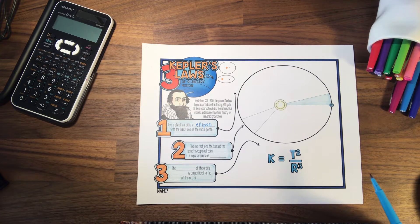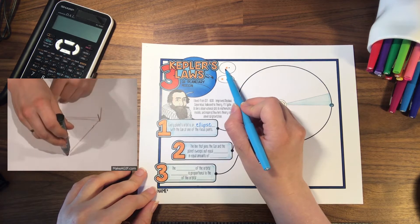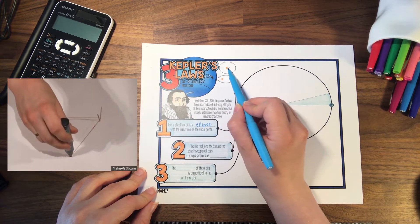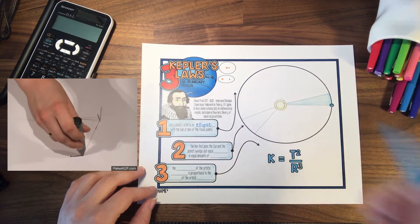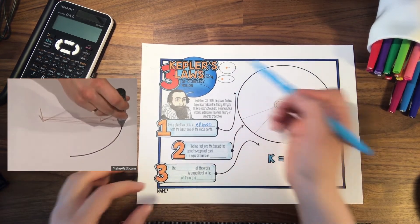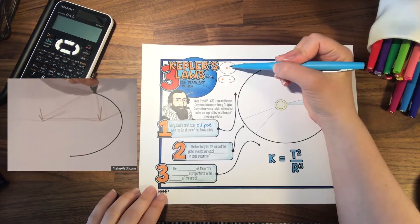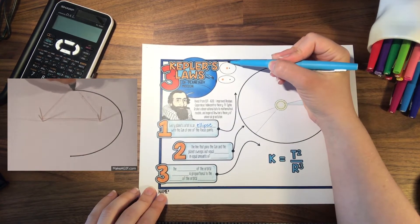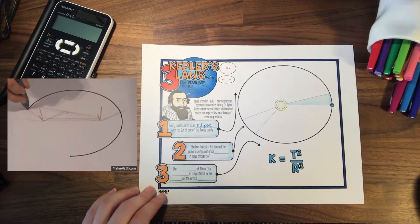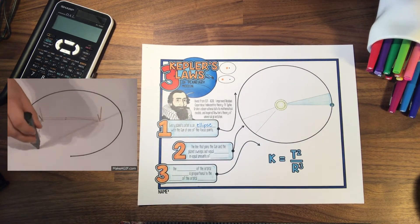An ellipse is basically like tying a string around two push pins and drawing around them. Because the string is bound by two points, it doesn't extend as far on the sides as it does at the top and bottom. That's what an ellipse is — kind of like a football shape.